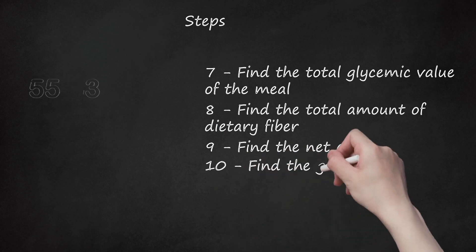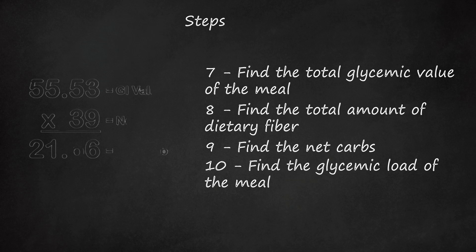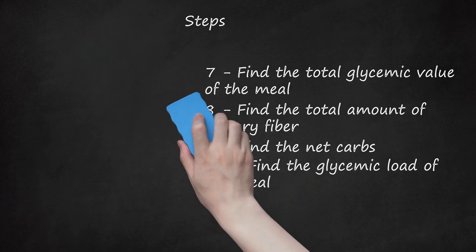Step 10: Find the glycemic load of the meal. Take the total glycemic value of the meal from step 7 and multiply it by the net carbs of the meal from the previous step, then divide your answer by 100. Example: 55.53 GI value times 39 net carbs equals 2,165.67. 2,165.67 divided by 100 equals 21.66 rounded.